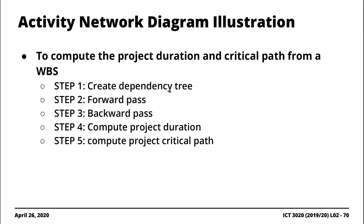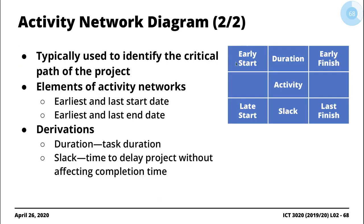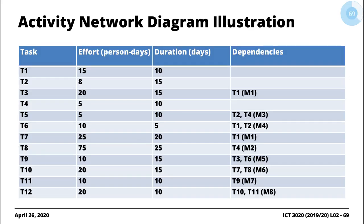The process is: first, create a dependency tree for all the tasks; then go through a forward pass to compute the duration of the project; then go through a backward pass to compute the slack associated with the different activities. Once done, we compute the duration and identify the critical path and slack values. During the forward pass, we compute the early start and early finish dates; during the backward pass, we compute the late start date, late finish date, and the slack.